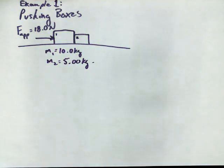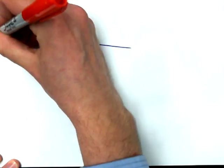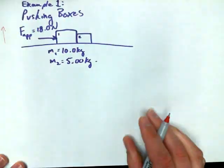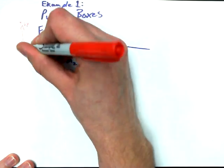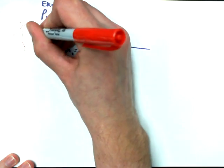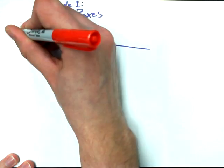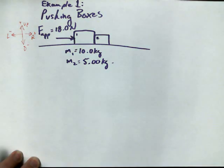I should really define the directional reference frame. So I think I'd like to say that up is positive, down is negative, to the right will be positive, and to the left will be negative. Just so that we can work that into our figuring later on.